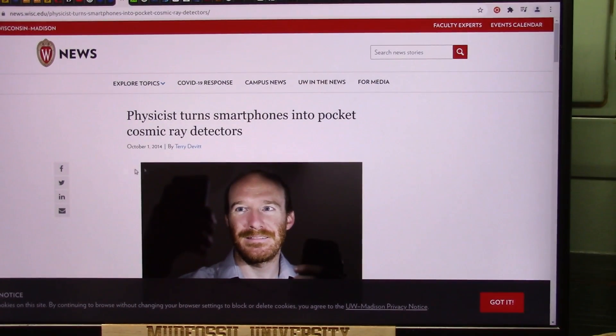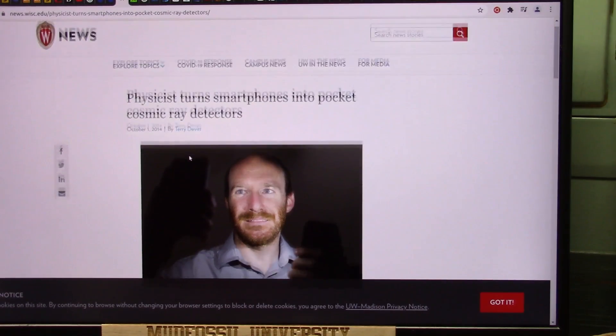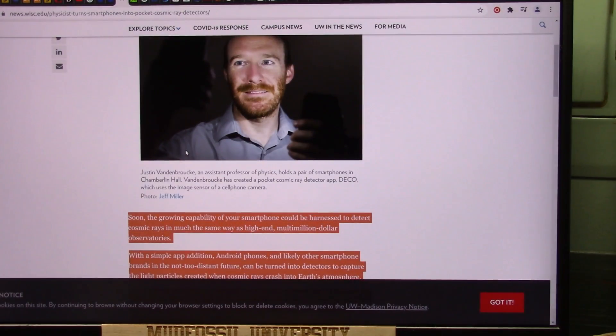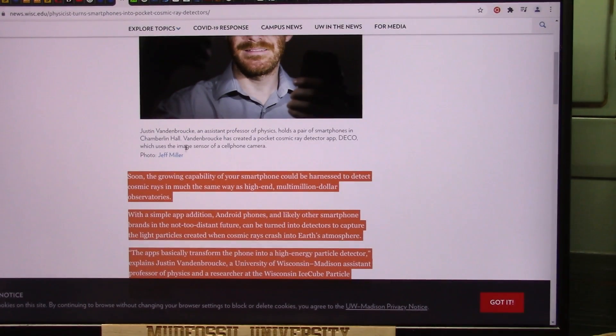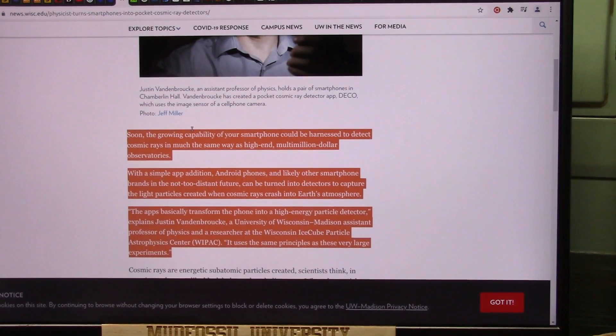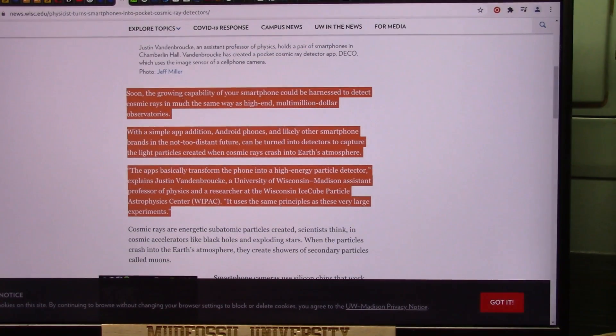You see this? This goes right back to the same time frame. This is October 2014. Well, 2012, they put out the Samsung Galaxy 3S, which is what we used. And this, and we were getting these, they're actually using them for cosmic ray detectors.